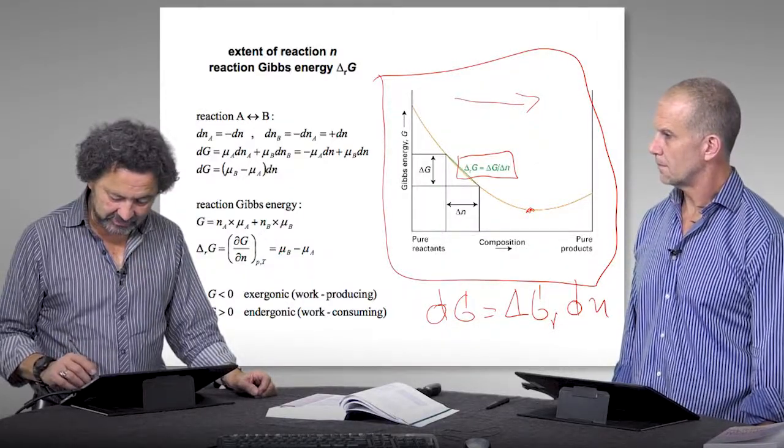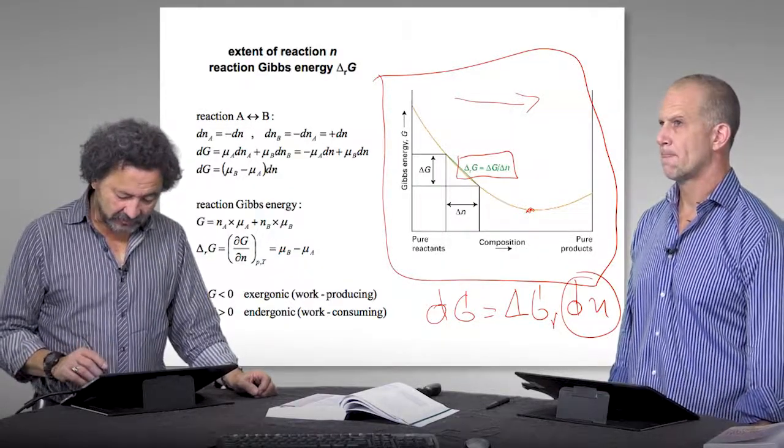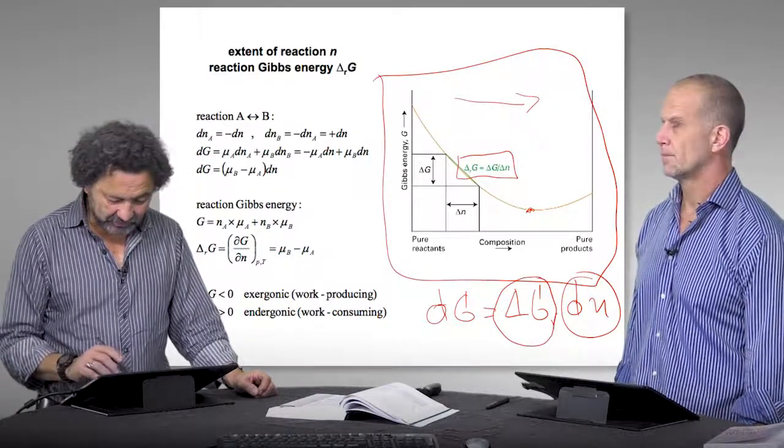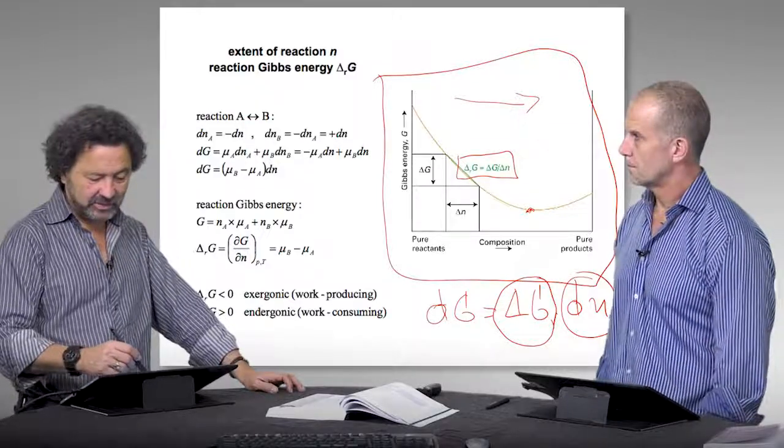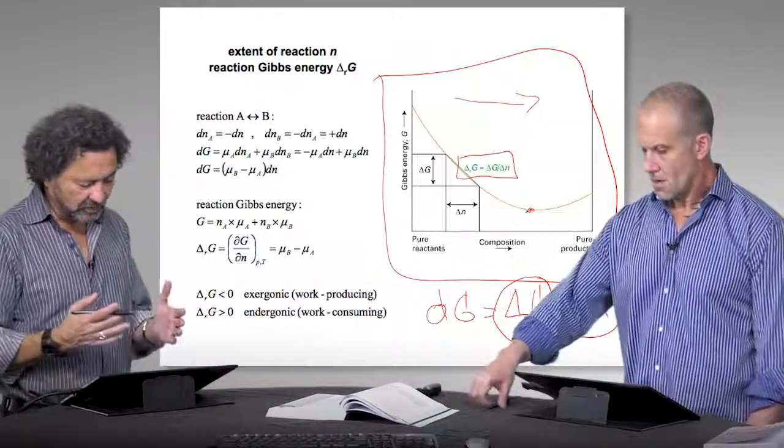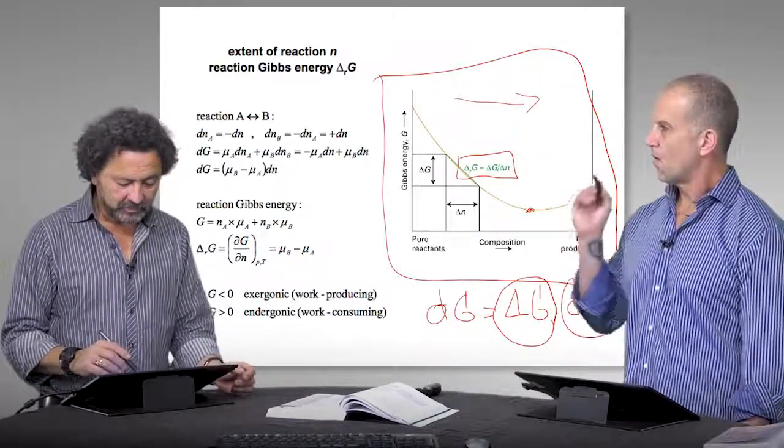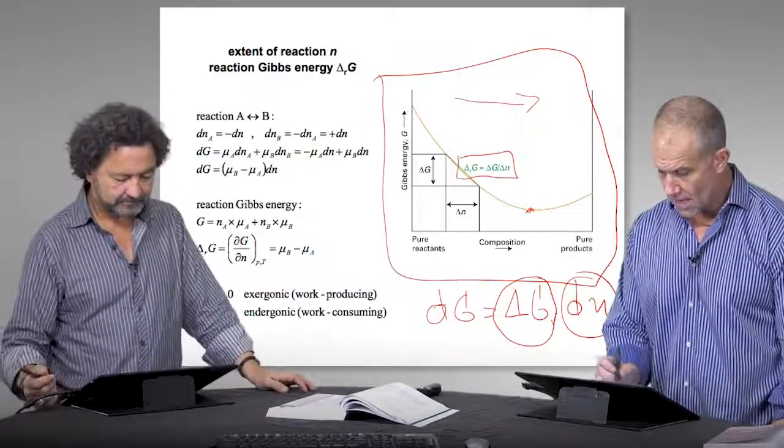So now we see that in going in that direction, free energy decreases up to this point where you have a minimum. So this will be the equilibrium composition and the fact that the free energy... So now you see this quantity here. This is the reaction free energy.